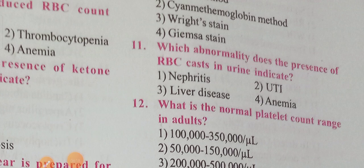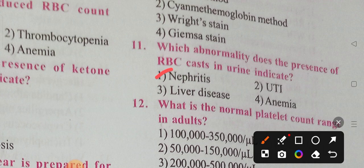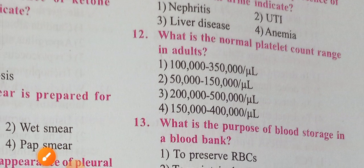Next question: which abnormality does the presence of RBC casts in urine indicate? Following that: what is the normal platelet count range in adults? The options are 50,000 to 1 lakh, 50,000 to 1.5 lakh, 2 lakhs to 5 lakhs, or 1.5 lakh to 4 lakhs. Option four, 1.5 lakh to 4 lakhs, is the correct answer.